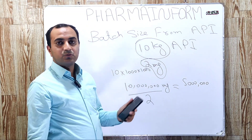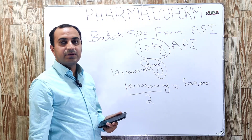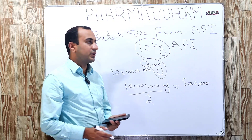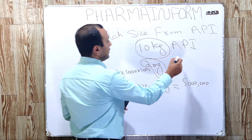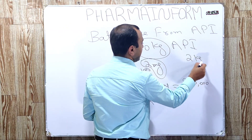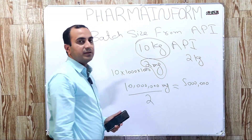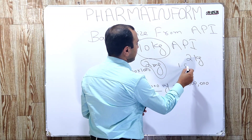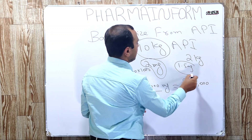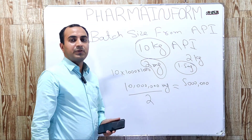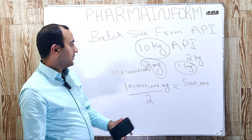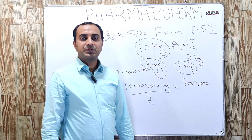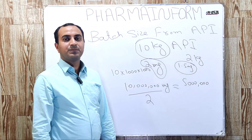I hope you are clear regarding the concept of this calculation. Now, give the answer to a query: if we have 2 kilograms of active pharmaceutical ingredient and each tablet contains 1.5 mg, how many tablets can be manufactured? Do give the answer in the comment box.